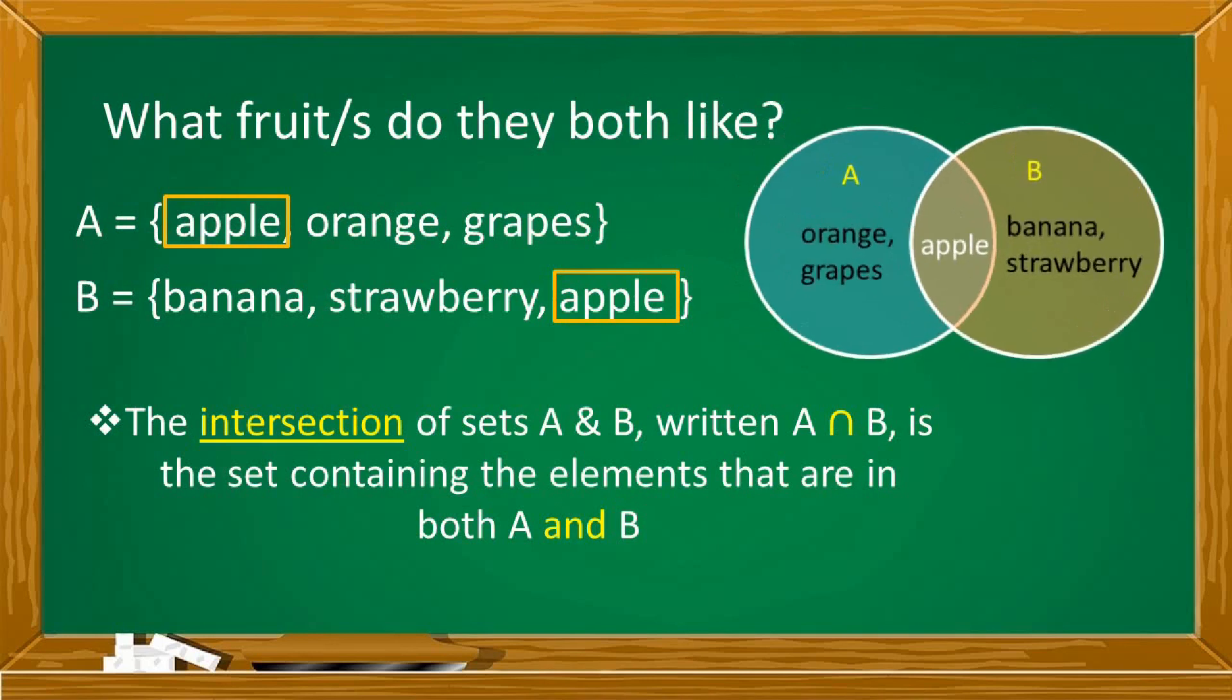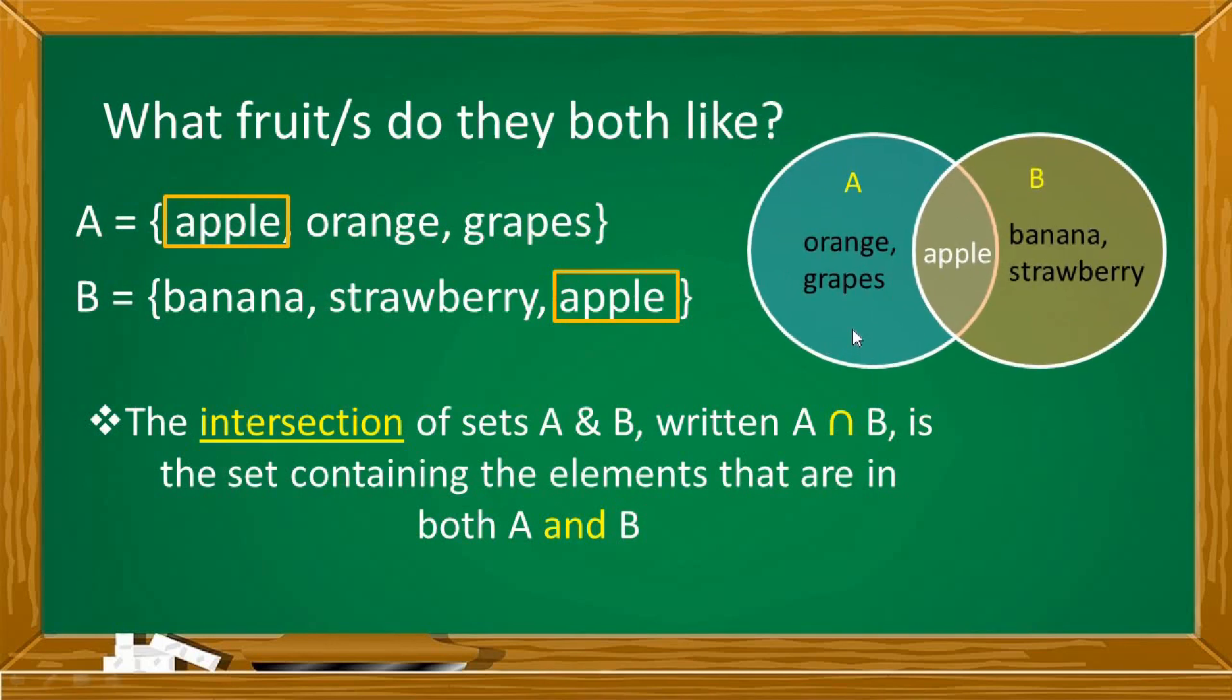So, it refers to elements na present sa parehong sets na kinakompare. Ano yung mga elements na pareho silang meron? Saan sila magkatulad? That is the intersection of sets. Using Venn diagram, the first circle represents set A with elements orange, grapes, and apple.